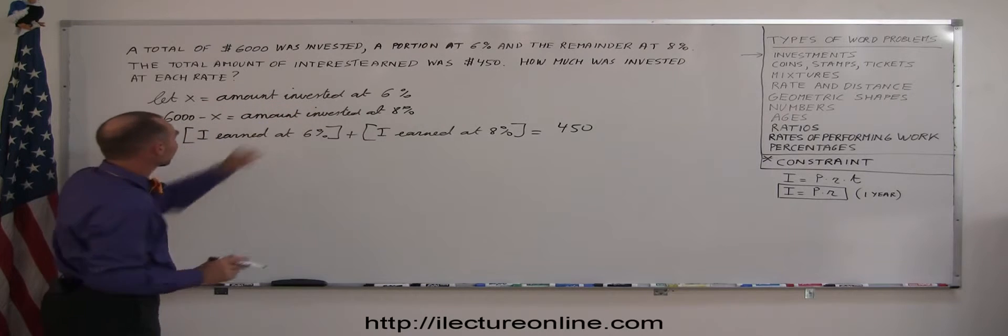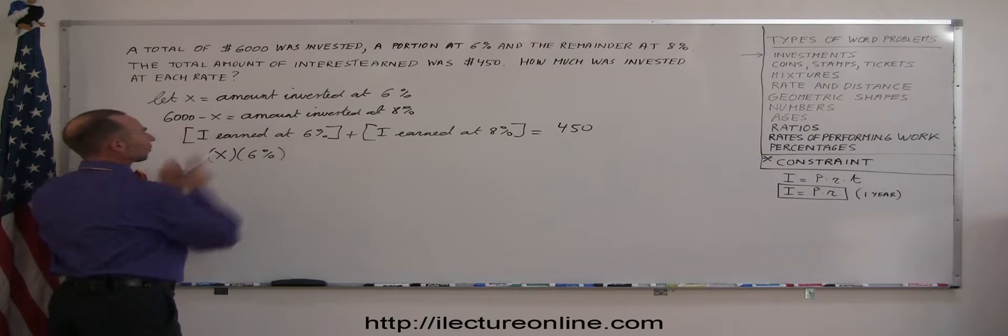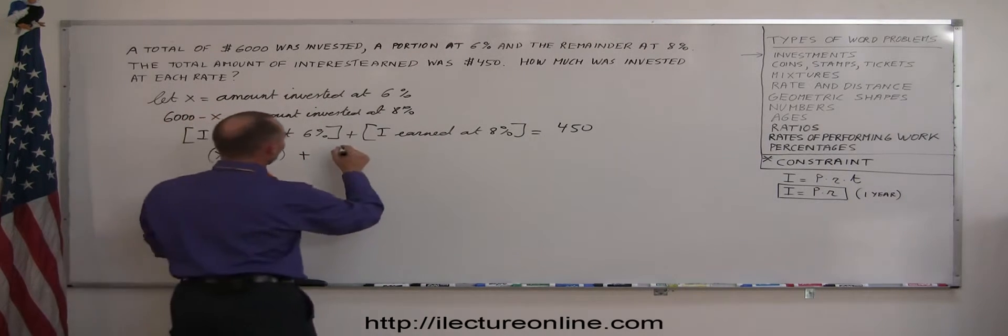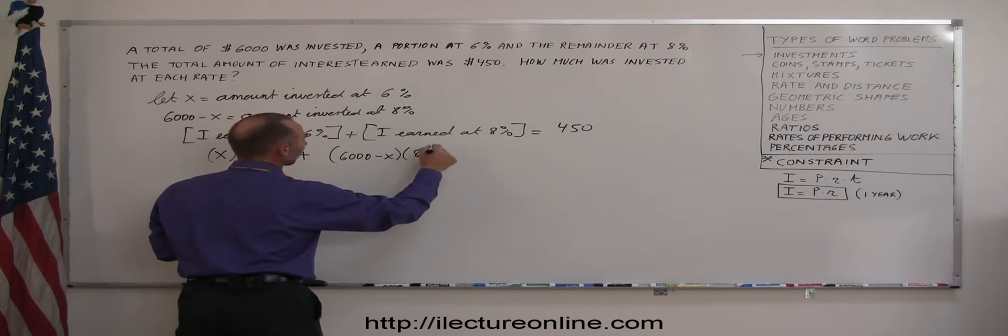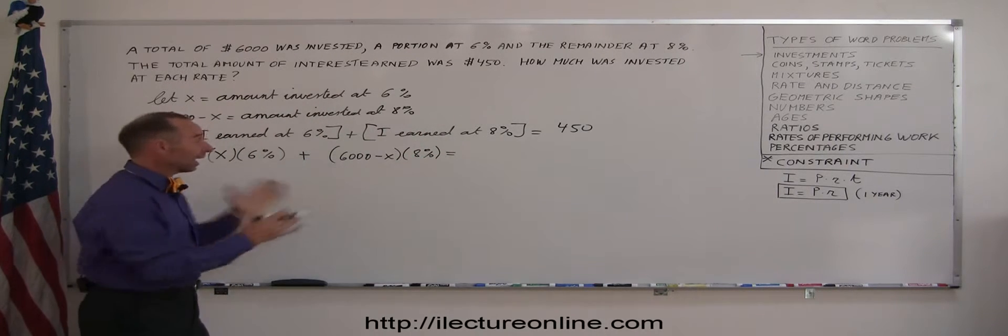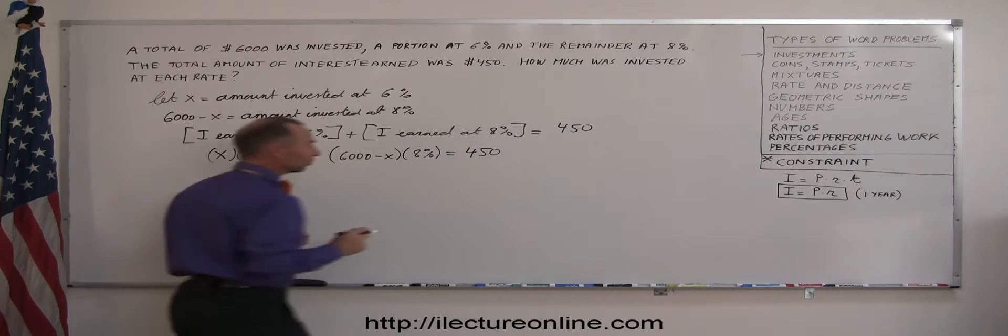So, principal is X, the rate is 6%. So, X times 6% is the amount that I earned at 6% plus principal times interest. So, $6,000 minus X times 8% is the amount that I've earned at 8%, and added those two together, I should get $450 of earnings.